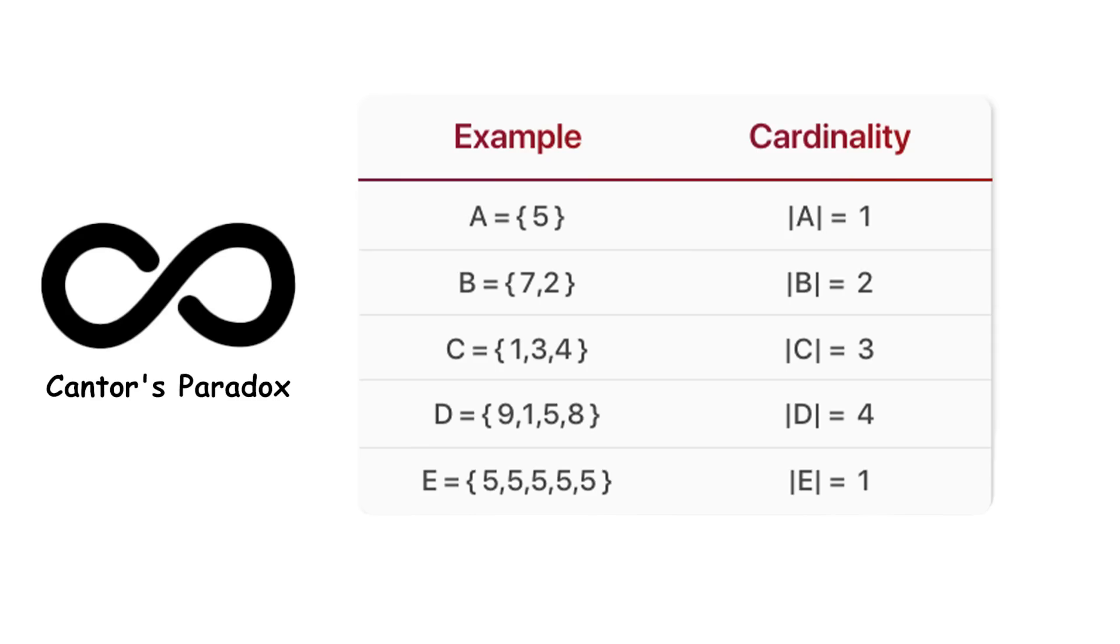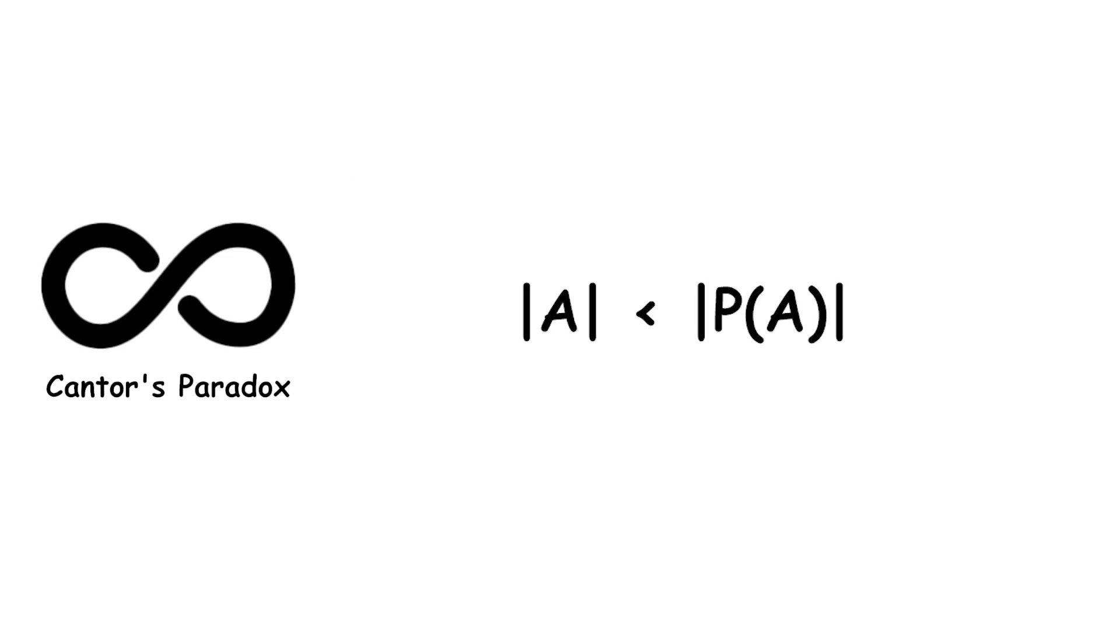Formally, if the size of A denotes the cardinality of A, then the size of A is less than the size of the power set of A. Here's why this is true.